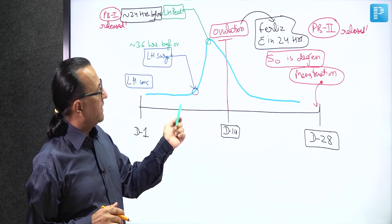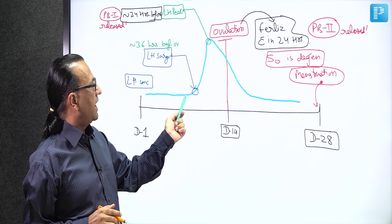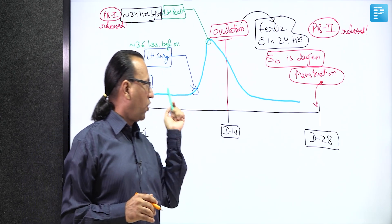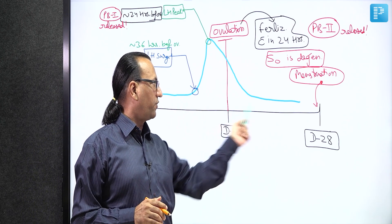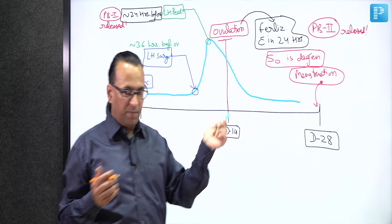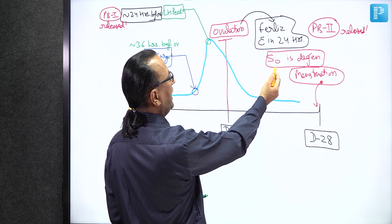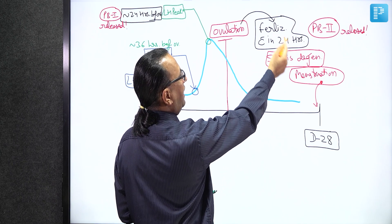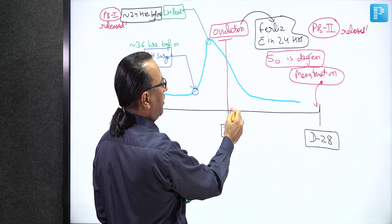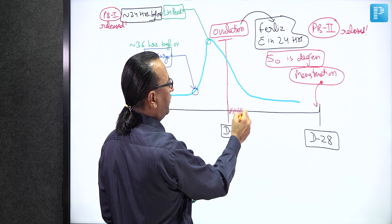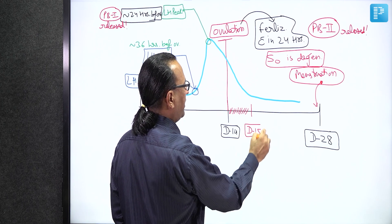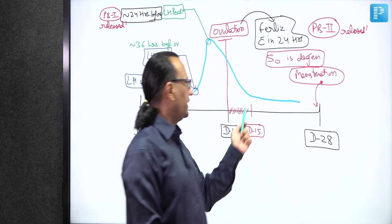To maximize the chance of fertilization, we give the lady an LH kit and advise her to undergo copulation whenever it becomes positive, which is around the day of ovulation. As for the oocyte, it can only wait 24 hours for the sperm — a window only until day 15. After day 15, the secondary oocyte has degenerated and cannot undergo fertilization anymore.